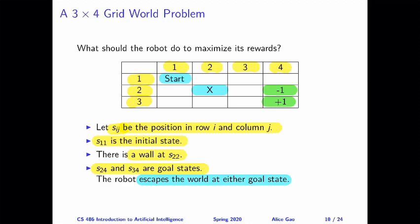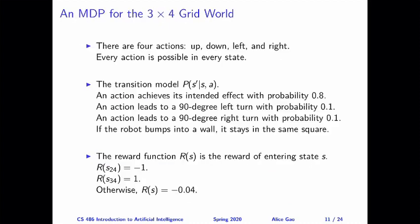There are a few additional components of the problem that I need to describe. I need to describe the actions, the transition probabilities, and the reward function. For each state, there are four possible actions: the robot can go up, down, left, and right. In this example, let's assume these directions are from our perspective, not from the robot's perspective. We're going to assume that every action is possible in every state. If the robot bumps into a wall, we'll take care of that when we define our transition probabilities.